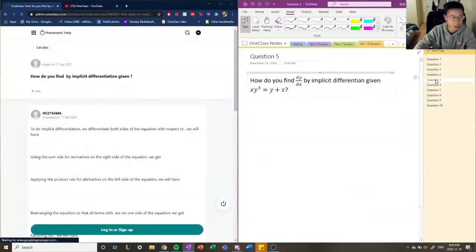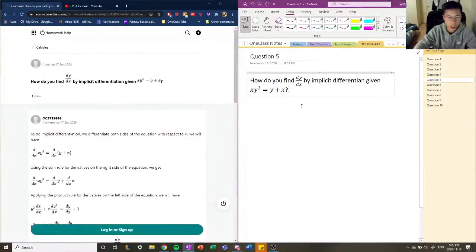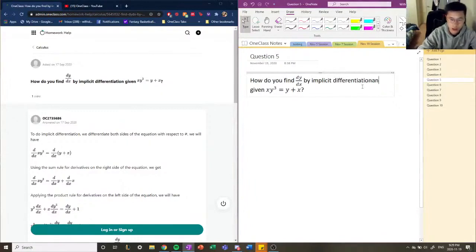Let's move on to question number five. So how do you find dy/dx by implicit differentiation given this function?